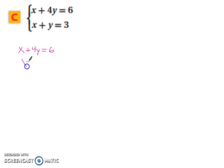We're going to get x by itself. So we're going to have x equals negative 4y plus 6. So x equals this quantity. We're going to replace x with that value.